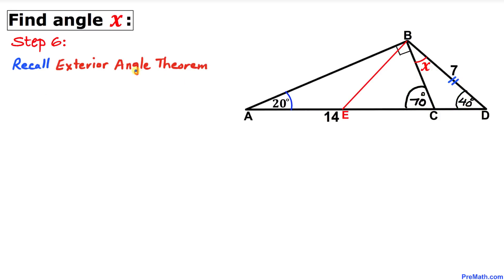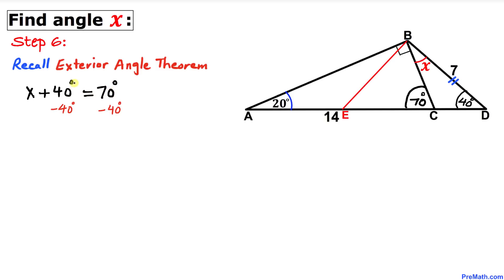Here's our final step. Let's recall the exterior angle theorem again. Angle ACB is an exterior angle equal to the sum of the two opposite interior angles. So I can write X plus 40 degrees equals 70 degrees. Subtracting 40 degrees from both sides, X turns out to be simply 30 degrees.